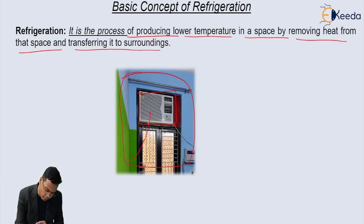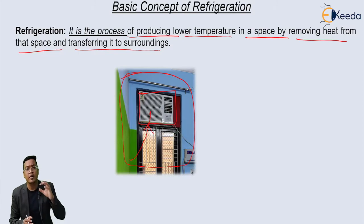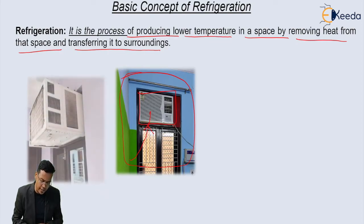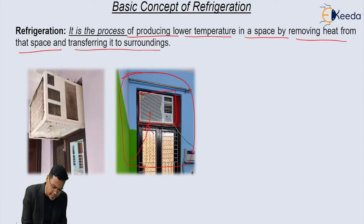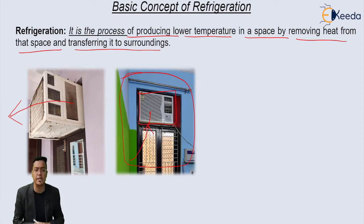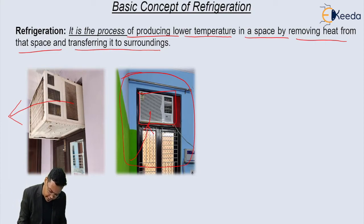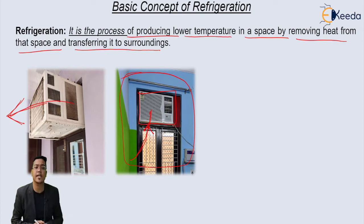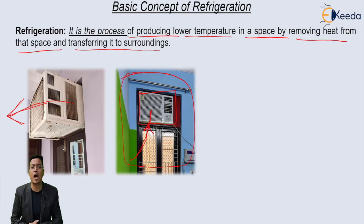This window AC will take the heat from this room and transfer it to the surrounding. You have seen the rear side of the window AC — it takes heat from the room and transfers that heat to the surrounding. This is the process of refrigeration.